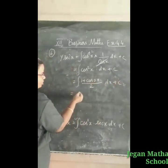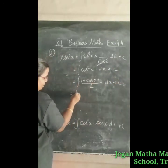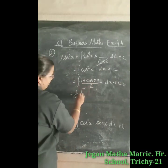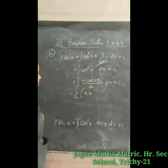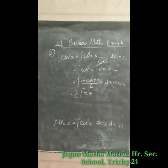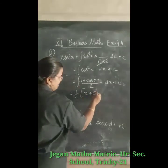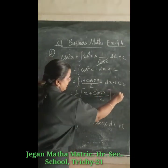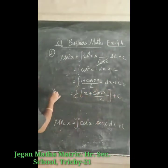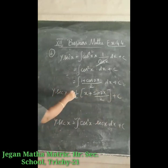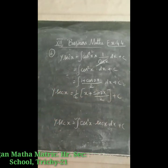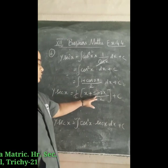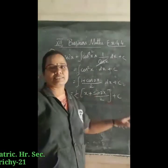Taking out 1/2 as common: integrating 1 gives x, and integrating cos 2x gives sin 2x/2. So the right-hand side becomes (1/2)(x + sin 2x/2) + c. Hence y·sec x = (1/2)(x + sin 2x/2) + c.